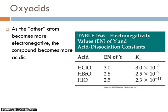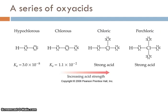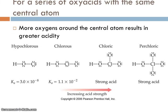As that other atom becomes more electronegative, the compound becomes more acidic, and we can go beyond HClO and HIO to include HBrO and see that pattern still holds. We can also have a series of oxy acids: hypochlorous acid HOCl, chlorous acid HClO2, chloric acid HClO3, and perchloric acid HClO4. As we go from one oxygen to four oxygens, we go from very weak acids to a strong acid. For a series of oxy acids with the same central atom, the more oxygens around that central atom, the more acidic it will be, because more electronegative oxygens pull electron density away from the O-H bond, making it easier for the hydrogen ion to dissociate when dissolved in water.